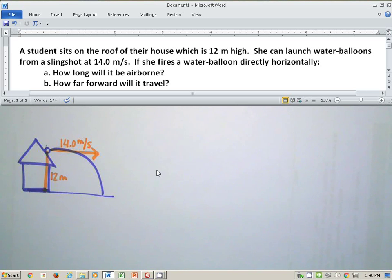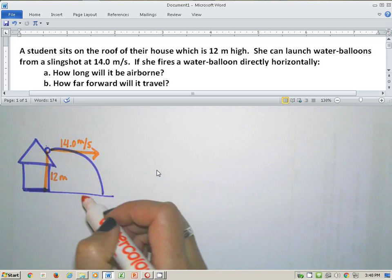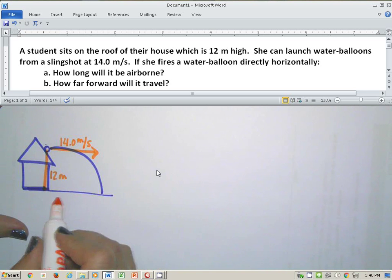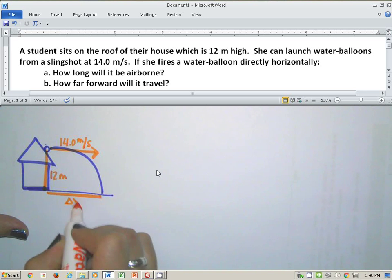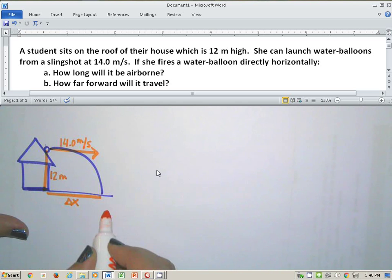It says she can launch water balloons from a slingshot at 14 meters per second, and she fires them directly horizontally. That means they come out of here with a horizontal speed of 14.0 meters per second. It wants to know how long it will be airborne and how far forward it will travel. So the how far forward, it's wanting me to find the delta X on the X axis.